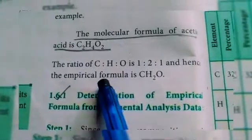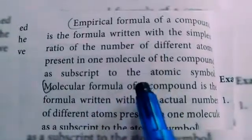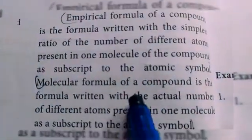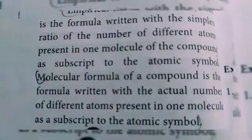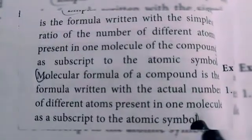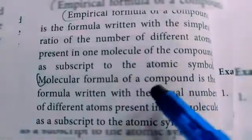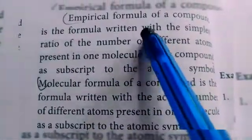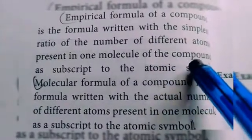For example, C, H, O — the ratio of these atoms gives us the formula. The molecular formula of a compound is the formula written with the actual number of different atoms present in one molecule as a subscript to the atomic symbol. The main difference is that the empirical formula gives the simplest ratio of atoms present in the compound, while the molecular formula gives the actual number.